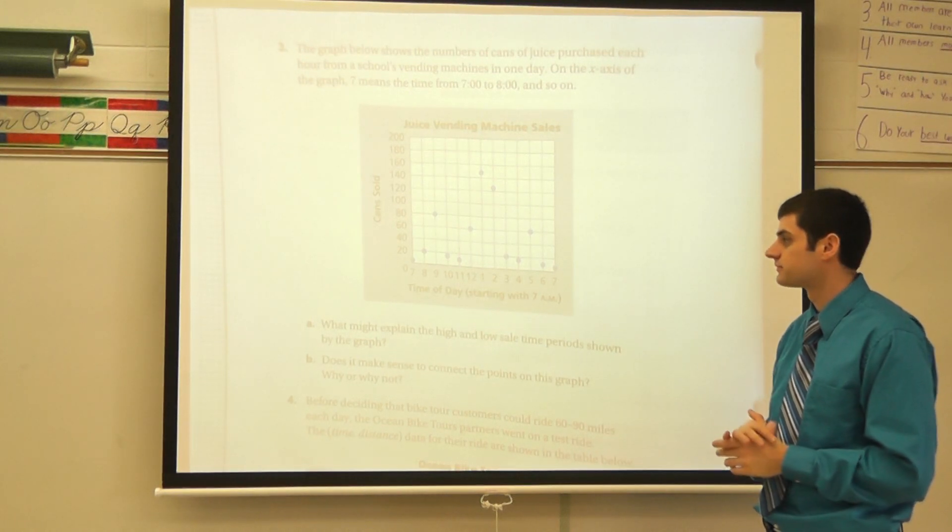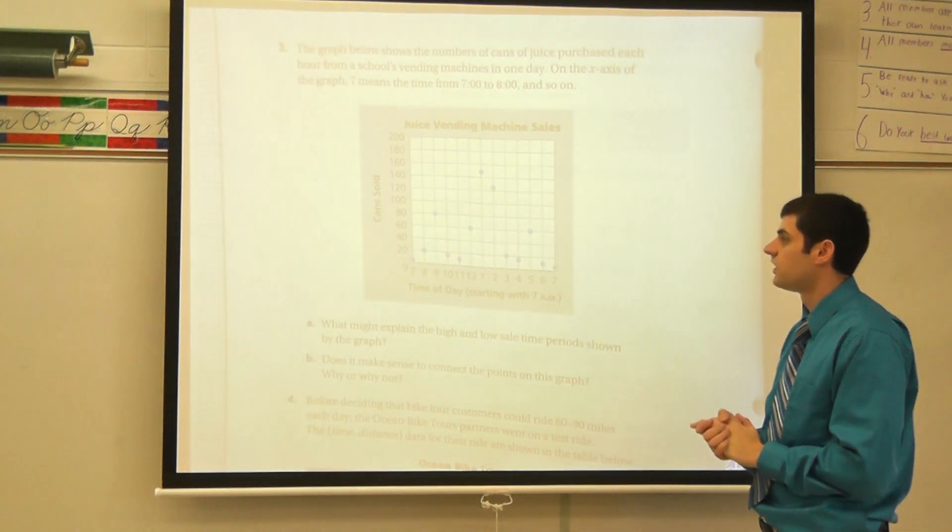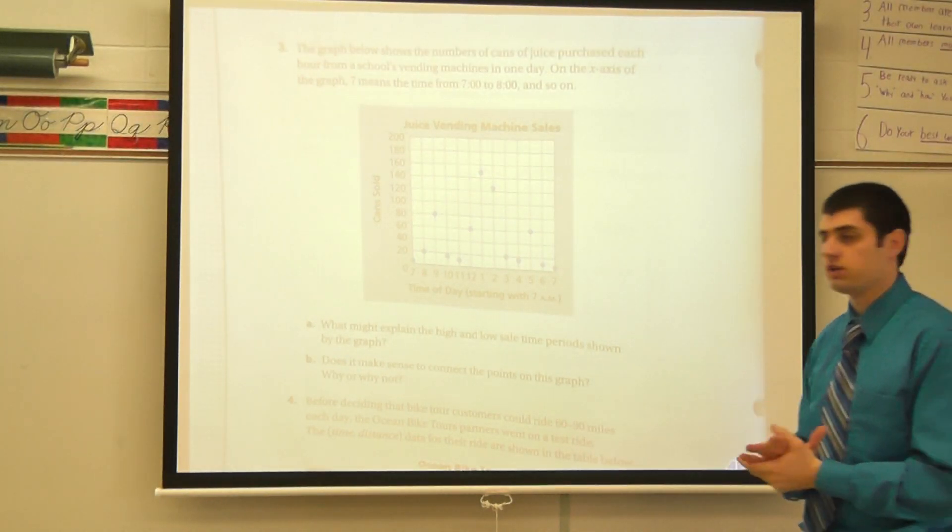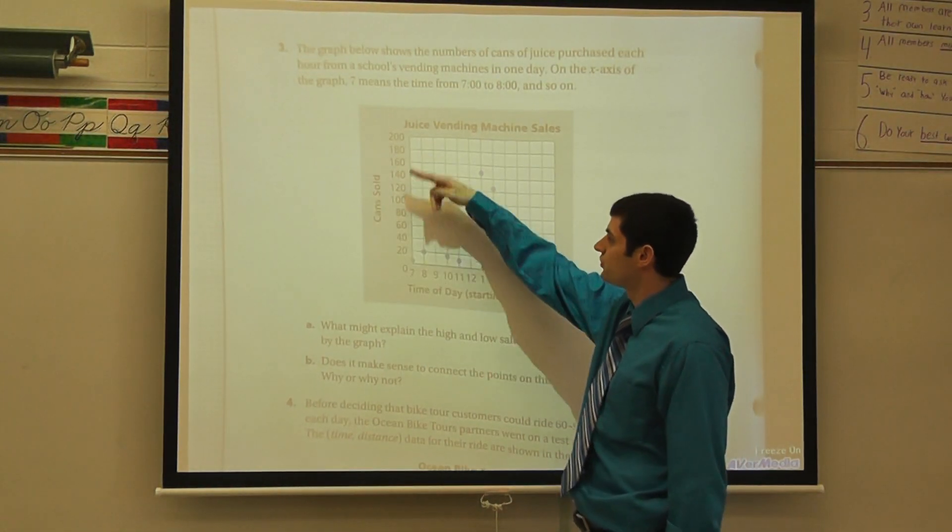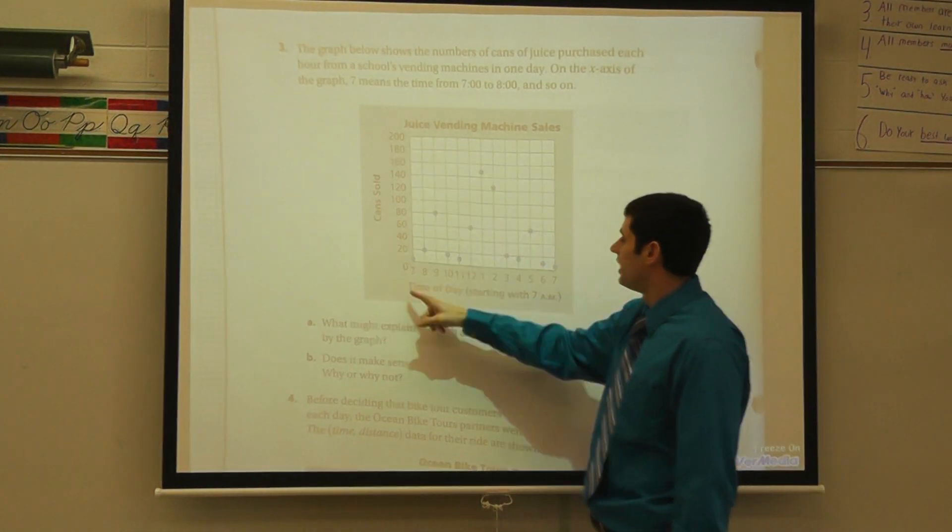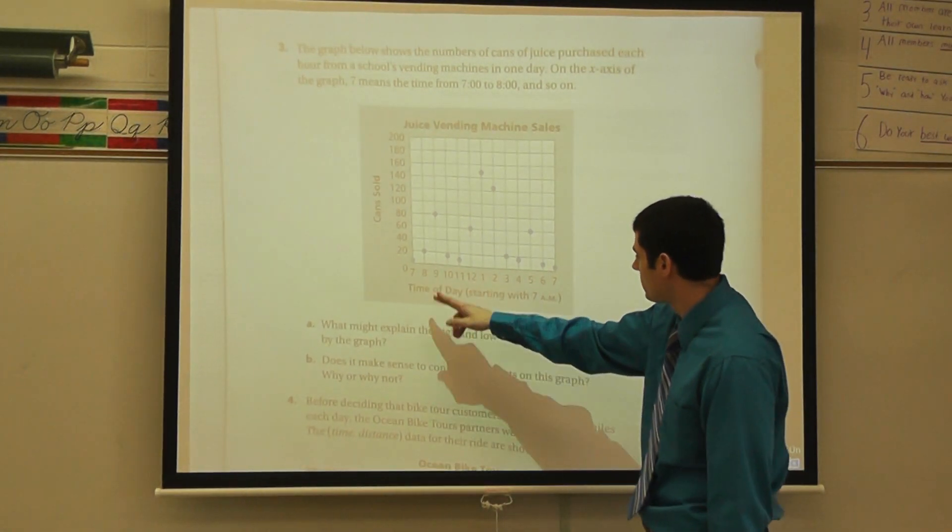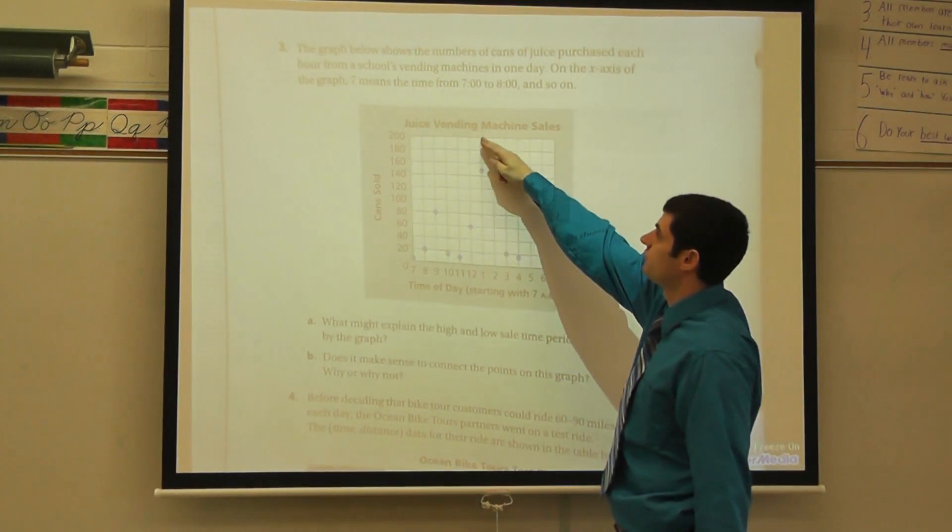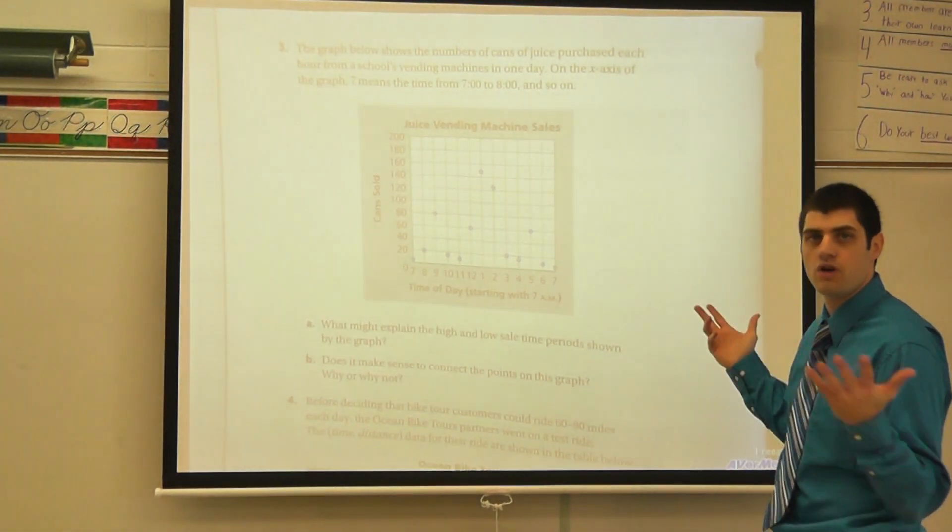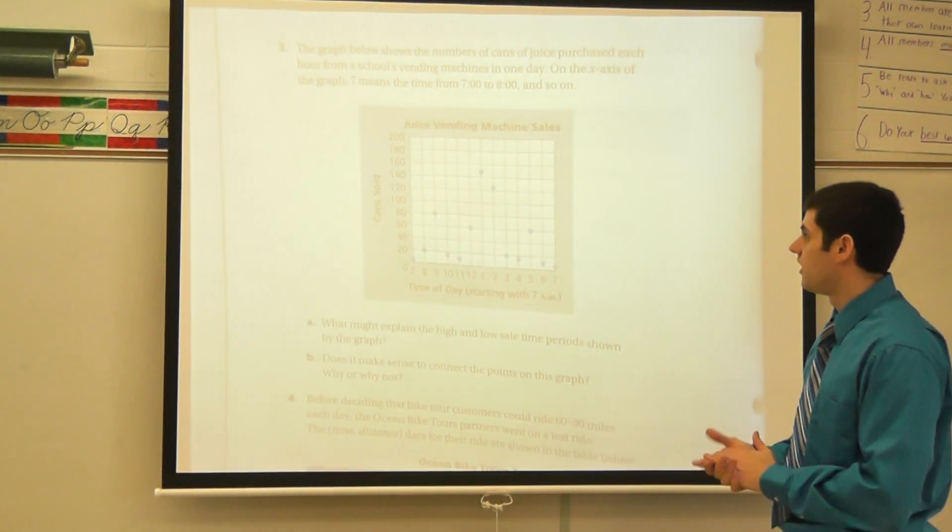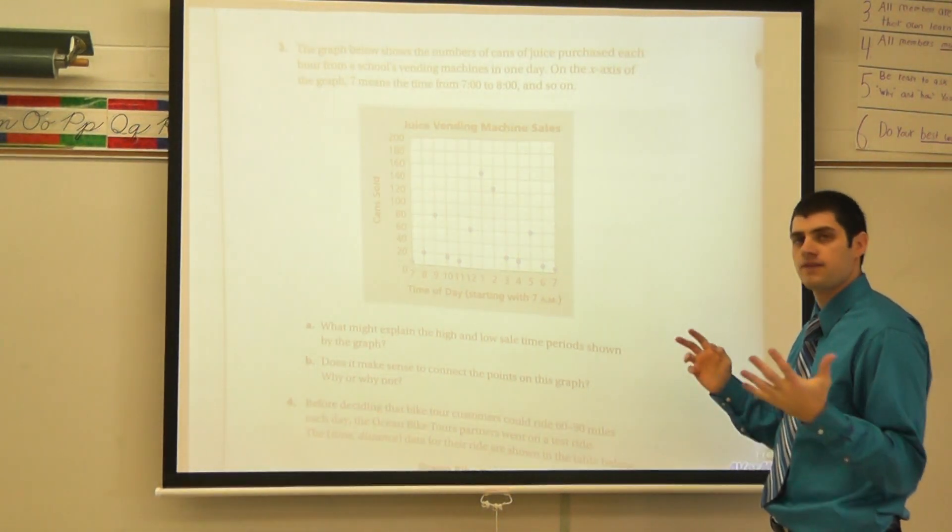When looking at this graph up here, our y-axis says cans sold. So this is the number of cans that are sold. It says time of the day starting with 7 a.m. So this goes from 7 a.m., 8 a.m., 9 a.m. So it's a one-hour interval all the way through. And this tells you it's the juice vending machine sale. So it's very important that we have a title to graph so that you know what do these numbers mean.